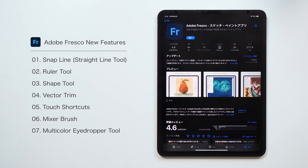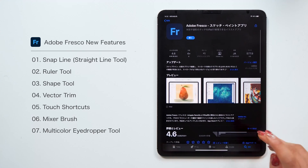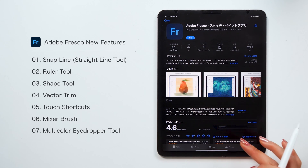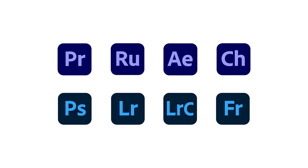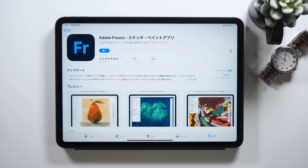The app icon has changed a lot too. It used to be light green in color, but now it's blue. The color of other Adobe app icons has changed too, and they don't have the frame anymore. For videos, we have Premiere Pro, Rush, After Effects, and Character Animator — the icons for these apps are purple now. For images at the bottom, we have Photoshop, Lightroom, Lightroom Classic, and Fresco, and these are now blue in color.